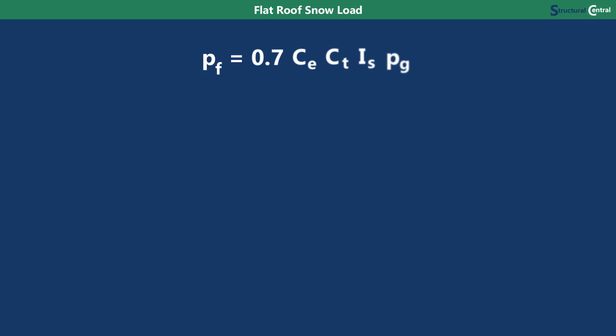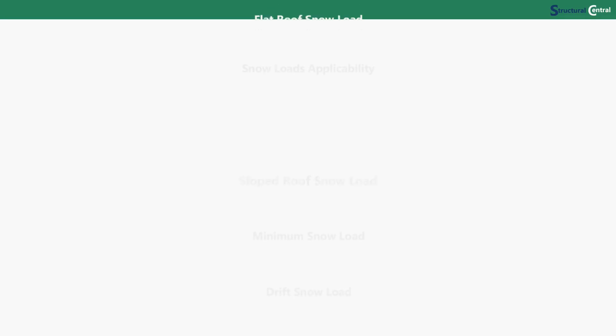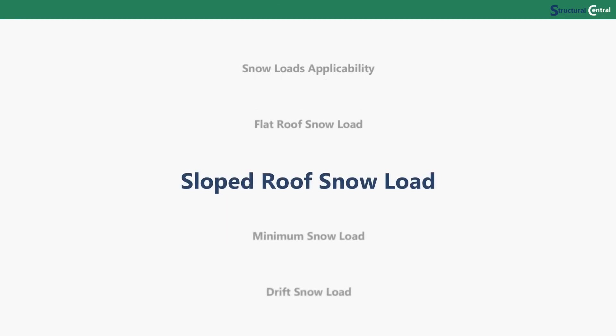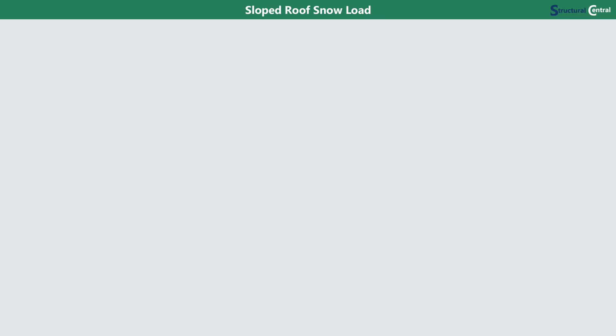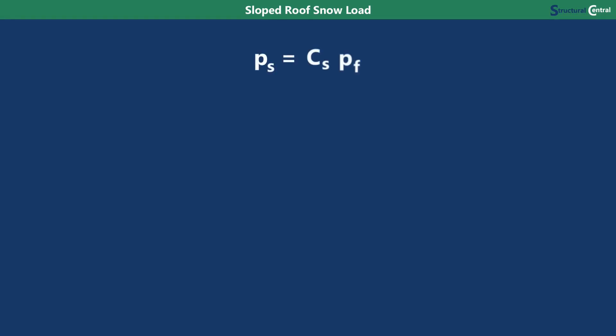Now that you have all the factors, you can plug them into the equation to determine the flat roof snow load. Next, you'll need to determine the sloped roof snow load, which is also called the balanced snow load. This is done by multiplying the flat roof snow load, PF, by the CS factor, which is the slope factor.